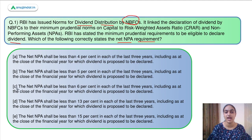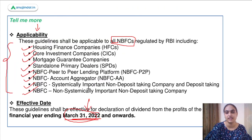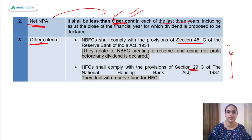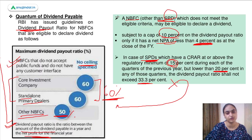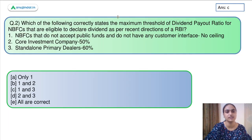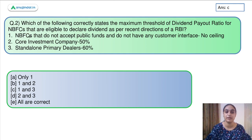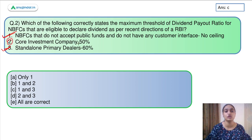The correct answer to question one is option C — the net NPA shall be less than 6%, as discussed. Moving to question two, which also relates to these guidelines: which of the following correctly states the maximum threshold of dividend payout ratio for NBFCs eligible to declare a dividend as per the recent RBI direction? For NBFCs that don't accept public deposits it's no ceiling; for standalone primary dealers and core investment companies it's 60%; for others it's 50%. The correct statements are first and third — answer is option C.